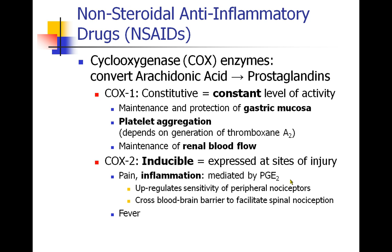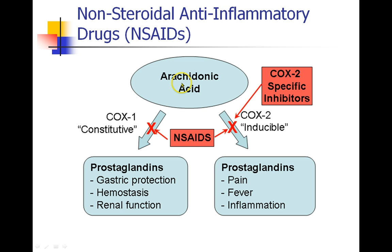The COX-2 enzyme is also responsible for fever. So just by looking at this, you can see if we wanted to design a drug for anti-inflammatory purposes, we would want it to work primarily on the COX-2 side. Here's a diagram showing the same thing again: arachidonic acid makes different kinds of prostaglandins — some protect your GI tract, are involved in hemostasis and platelet aggregation, and maintain normal renal blood flow via COX-1. Other prostaglandins, responsible for pain, fever, and inflammation, are facilitated by the COX-2 enzyme.